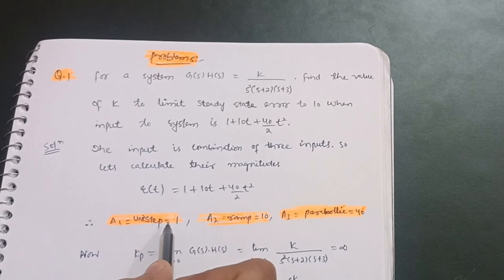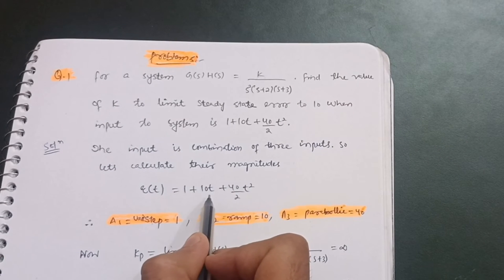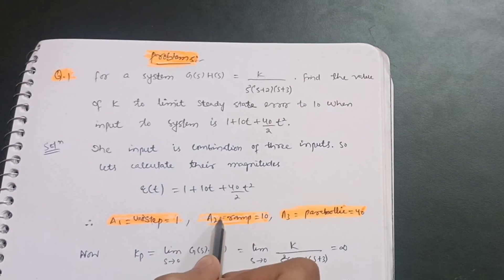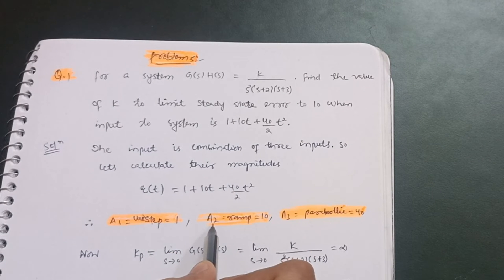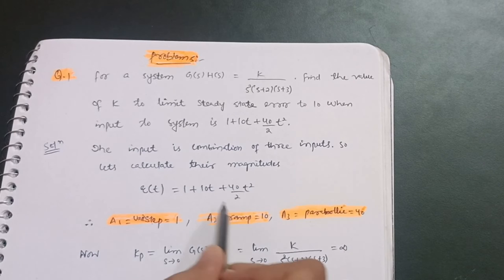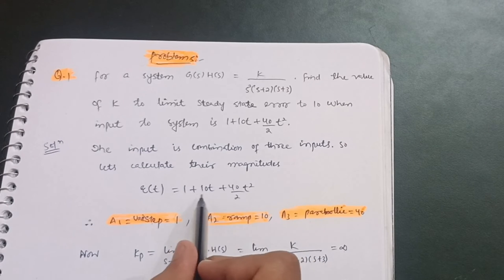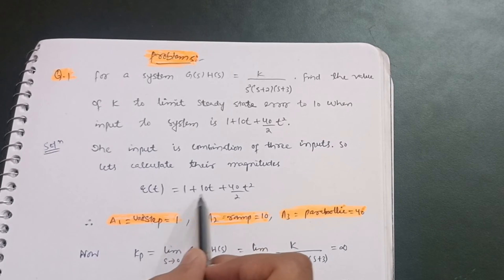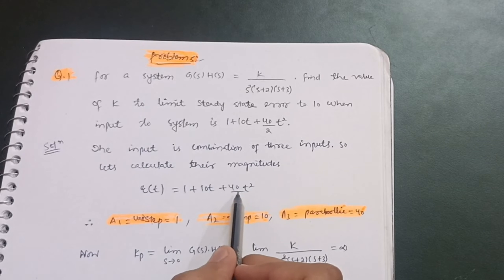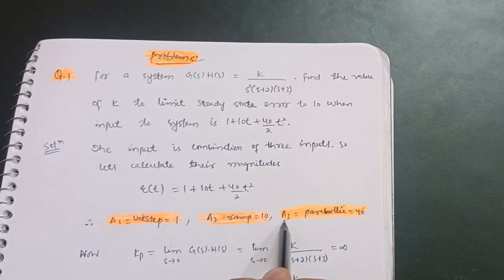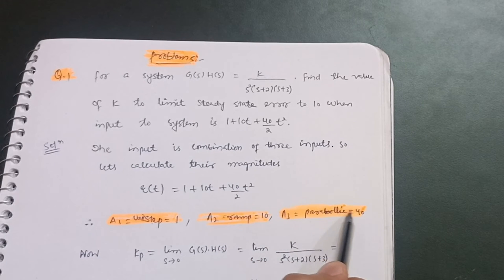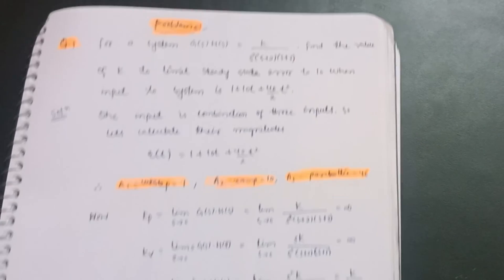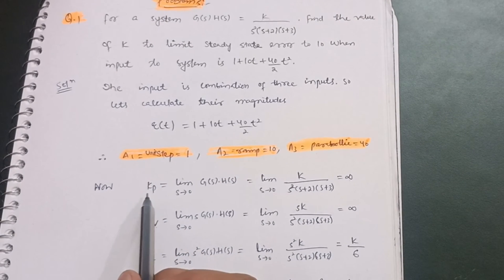The first component is the step input, denoted a1 = 1. The second component, 10t, is the ramp input, denoted a2 = 10 (the coefficient without t). The third component, (40/2)t², is the parabolic input, denoted a3 = 40.